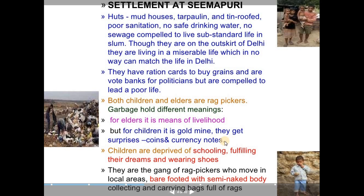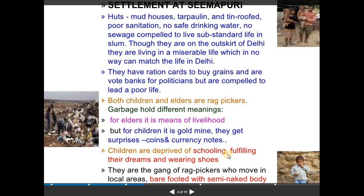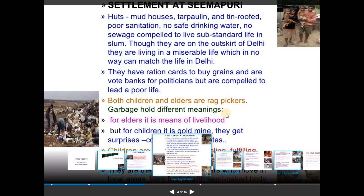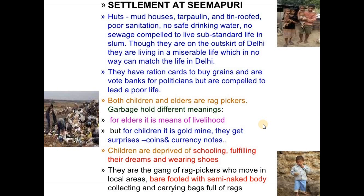The children of Seemapuri are deprived of schooling because there are no schools in the slums. They cannot fulfill their dreams, and even the dream of wearing shoes is a far cry. They are a gang of rag pickers who move barefooted with semi-naked bodies, carrying bags full of rags in local areas. In the chapter, Anees Jung once inquired why they walk barefooted. They answered that they have shoes but their mothers don't give them to wear, in case they lose them.